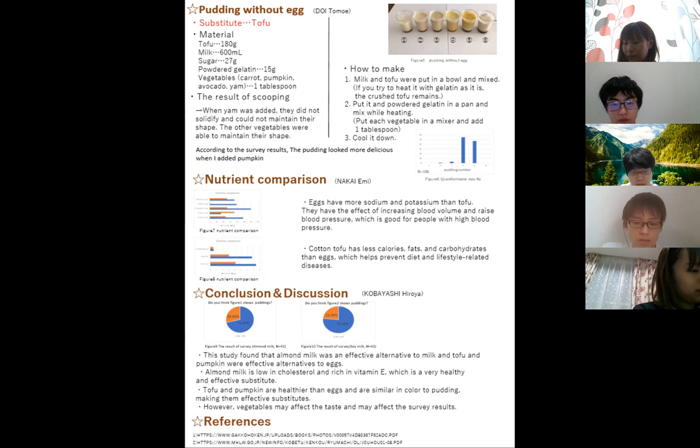Pudding is a food that cannot be eaten by people with milk or egg allergy. Milk can be replaced with almond milk and soy milk, and eggs can be replaced with tofu. Almond milk and soy milk have pudding-like color. However, tofu does not have the color of pudding and it is necessary to add a new ingredient to tofu. The study found that almond milk was an effective alternative to milk and tofu and pumpkin are effective alternatives to egg. Thank you for listening.